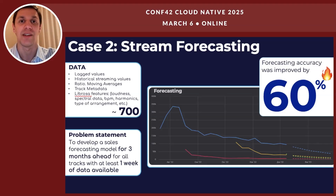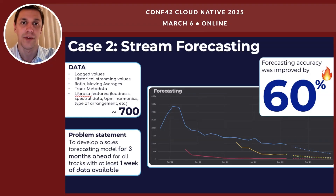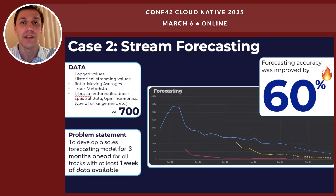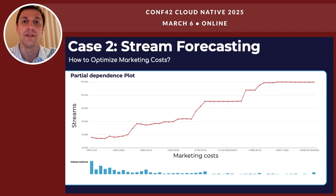Now let's look at the second key AI use case: stream forecasting. Stream forecasting is about predicting how many times a song will be streamed — critical for planning and marketing. We built a three-month forecasting model using historical streaming trends, track metadata, and Librosa features, with around 700 features in total. The result: forecasting accuracy improved by 60%, helping labels allocate budgets more effectively — which is increasingly important for Warner, which consists of different independent labels such as Atlantic.